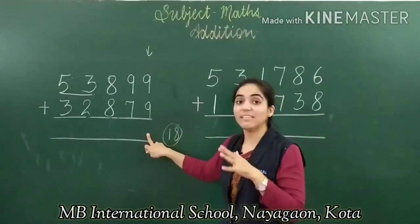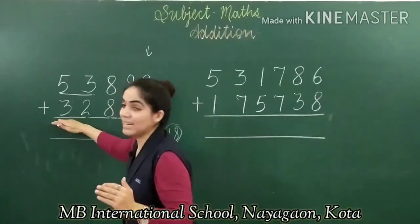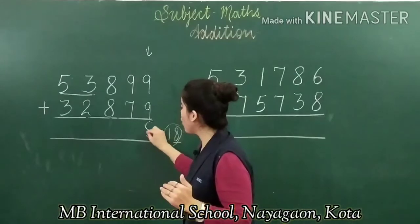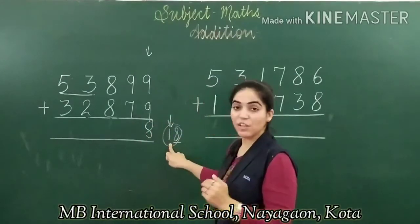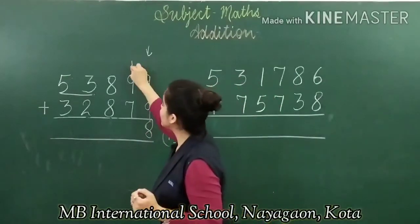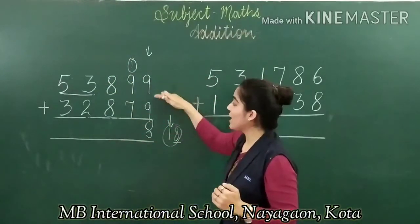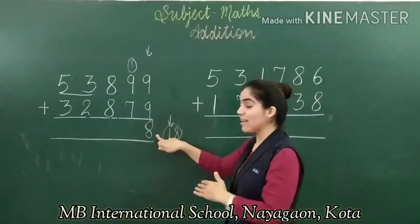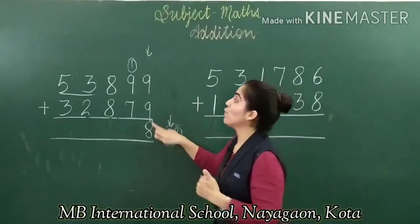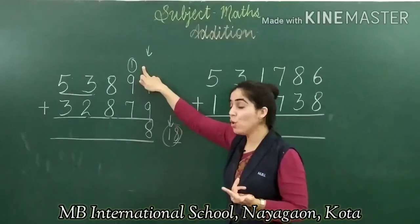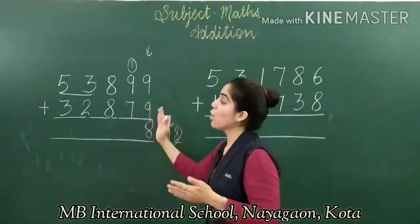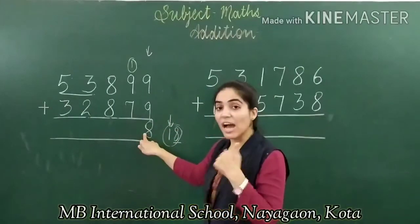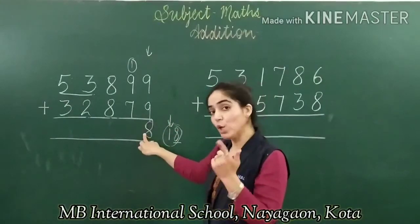We cannot write eighteen as it is because we have more addends ahead. So we write the last digit of eighteen — eight — below as the sum, and the first digit, which is at the tens place, we carry it forward. After adding nine and nine we got eighteen: eight goes down and one is carried. We do this because we cannot write a two-digit answer when there are more addends.